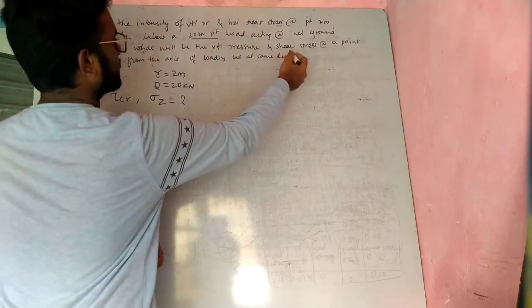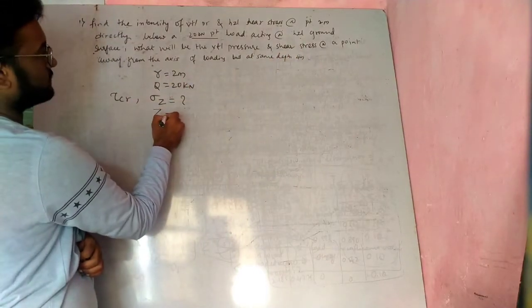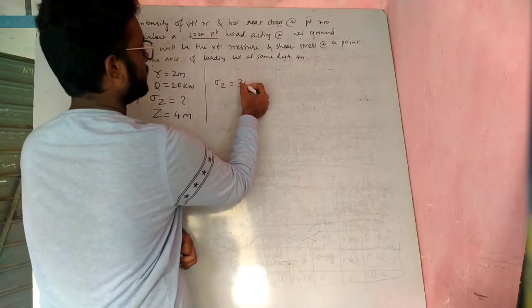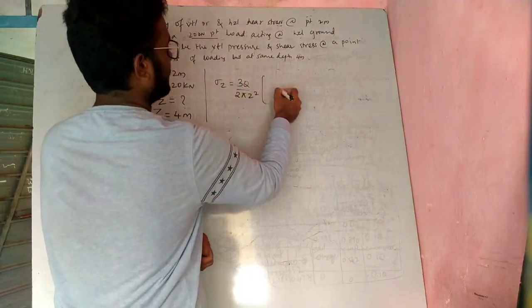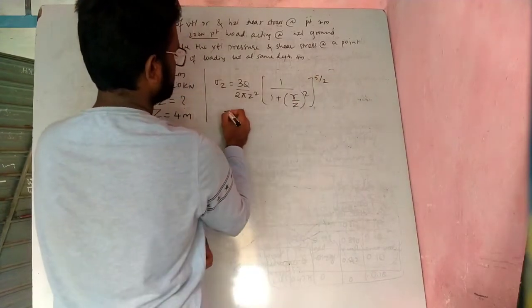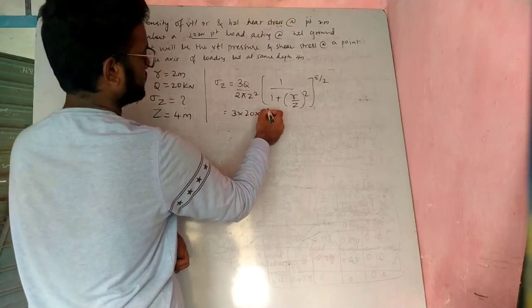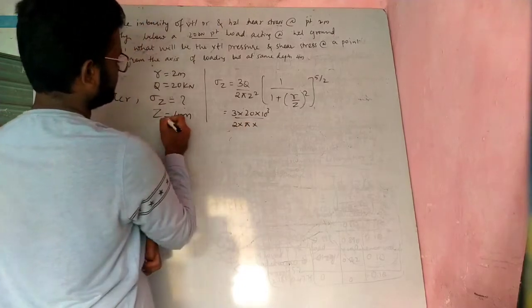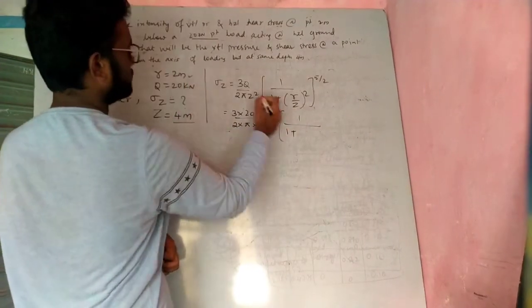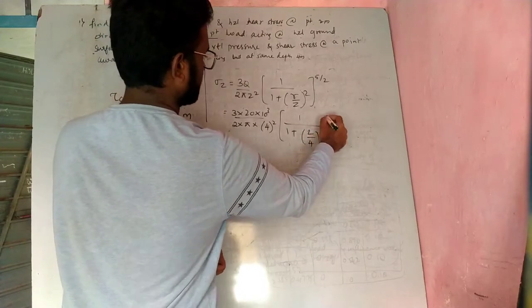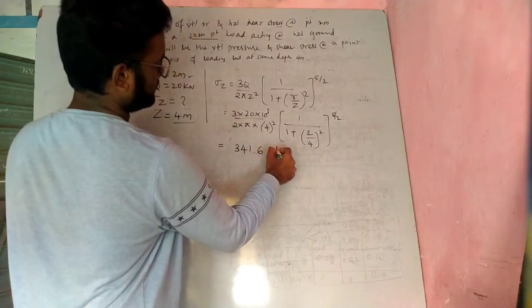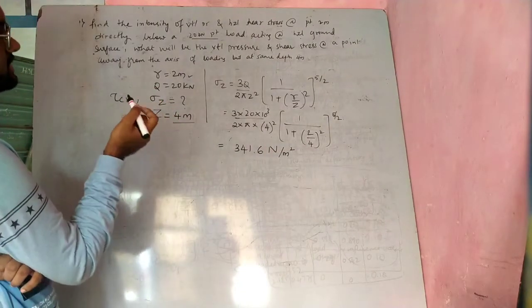We also need the shear stress at a point away from the axis of loading at the same depth z equal to 4 meter. The formula for vertical stress under a point load is σz equal to 3q divided by 2π z² multiplied by 1 divided by (1 plus (r/z)²) to the power 5/2. Substituting q=20 kN, z=4m, r=2m gives σz equal to 341.6 N/m².